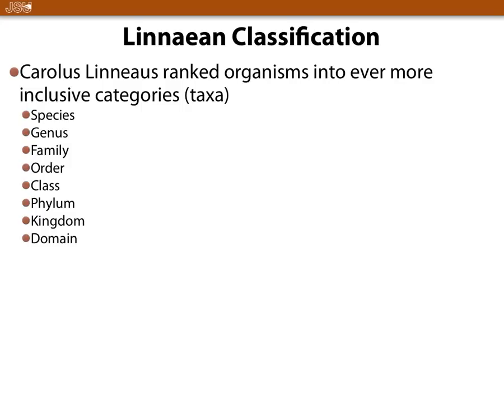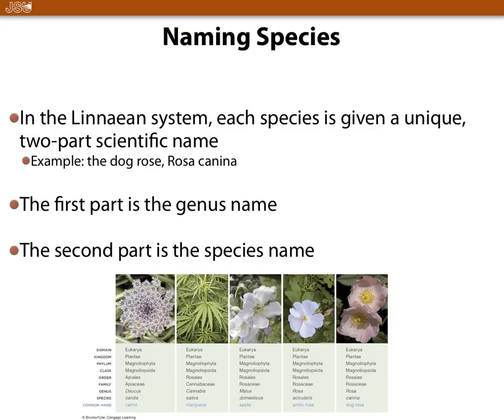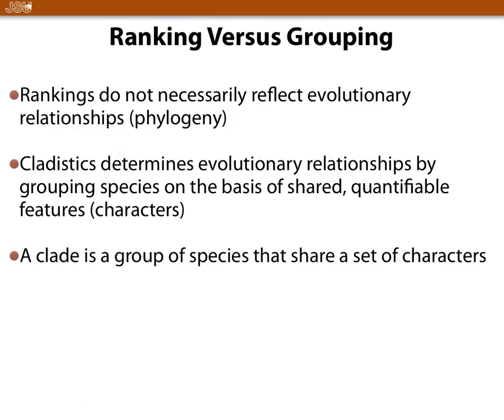All organisms are named by their genus and species name — genus first, species second. For example, Homo sapiens: genus is Homo, species is sapiens. Homo erectus: genus is Homo, species is erectus. Cladistics determines evolutionary relationships between different species based on features or genetic characteristics.